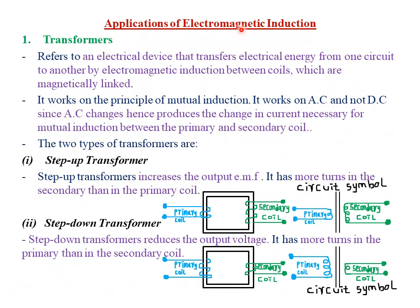We now look at applications of electromagnetic induction, and the first application is in transformers. A transformer is an electrical device that transfers electrical energy from one circuit to another by means of electromagnetic induction between coils which are magnetically linked. The circuit where electrical energy is transferred from is called the primary coil or primary circuit, and the circuit where electrical energy is transferred to is called the secondary coil or secondary circuit.